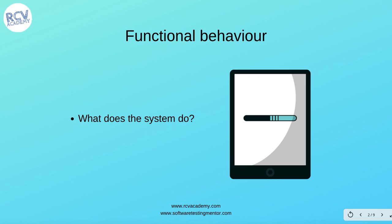The first thing is that functional behavior should be mentioned in the acceptance criteria — what exactly the system does. For example, if you're working on an e-commerce project, one functionality could be adding or removing an item from the cart. There could be many user stories defined, and one story could define just the functionality of adding and removing items from the cart.